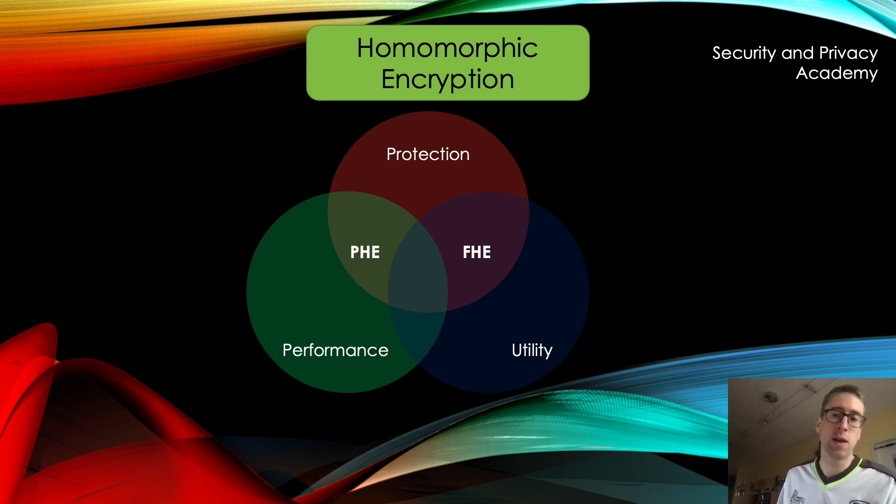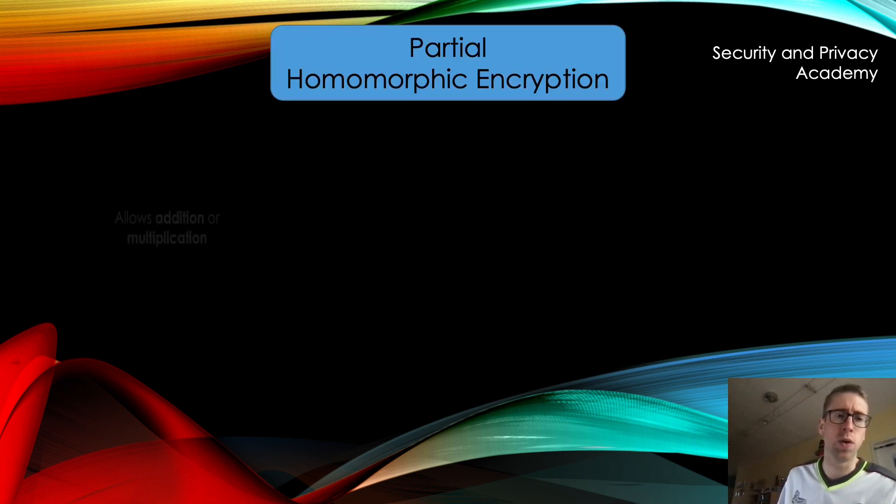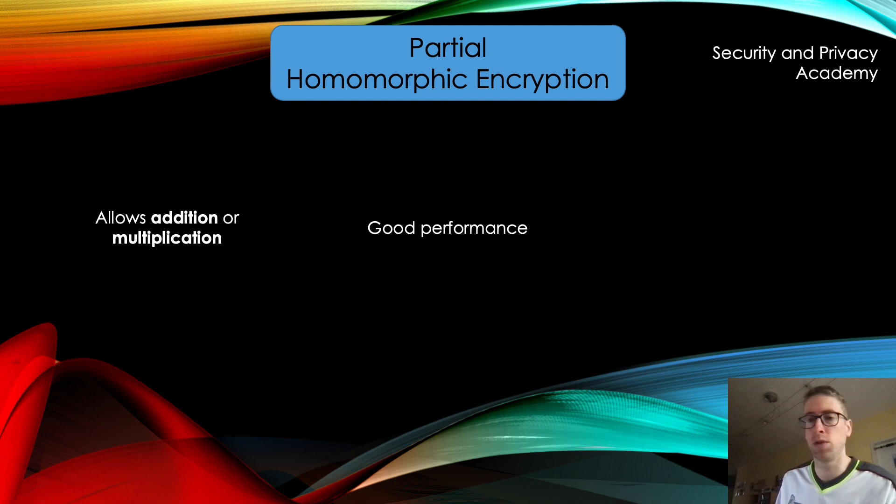Partial homomorphic encryption, however, is the topic of today's video. PHE allows addition or multiplication, not both. So we can do either or. It has a good performance, which separates it from fully homomorphic encryption, and it uses algorithms, concepts you are maybe already familiar with, namely El Gamal, RSA, or Paillier encryption.